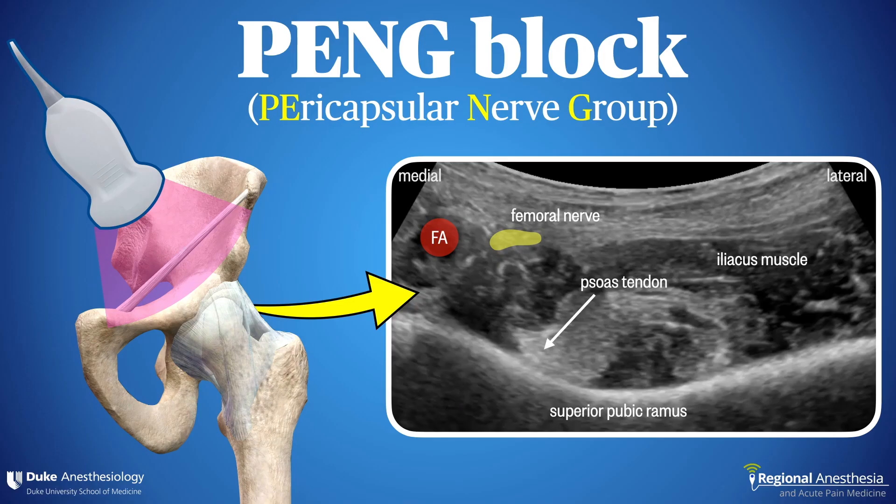The pericapsular nerve group or PANG block is an injection of local anesthetic along the brim of the pelvis, designed to anesthetize the small articular nerve fibers that innervate the anterior medial capsule and hip joint. The idea behind this technique is that it provides good analgesia for hip pain and hip-related procedures while avoiding any motor block of the lower limb. In this video, we'll discuss the anatomy and rationale for this block and go through the block technique in detail.